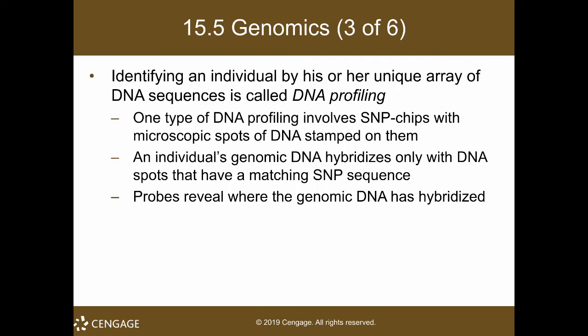Identifying an individual by their unique array of DNA sequences is called DNA profiling, usually applied in crime forensic investigations. One type of DNA profiling involves SNP chips — microscopic spots of DNA stamped on them representing single nucleotide polymorphisms, which are individual single-nucleotide differences between individuals. Individual genomic DNA hybridizes only with DNA spots that have a matching SNP sequence, and probes reveal where the genomic DNA has hybridized.